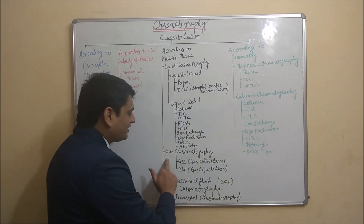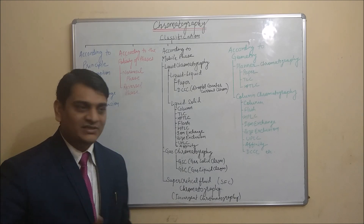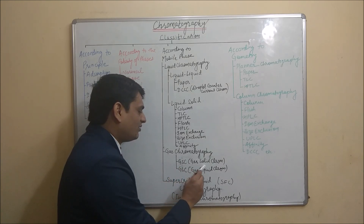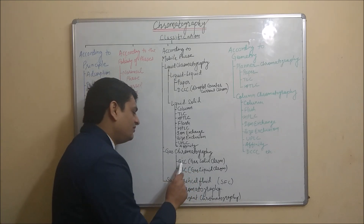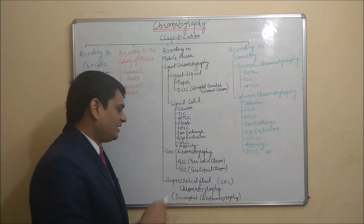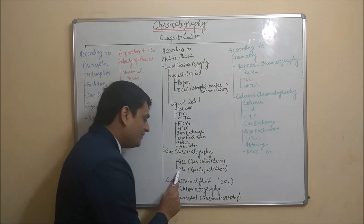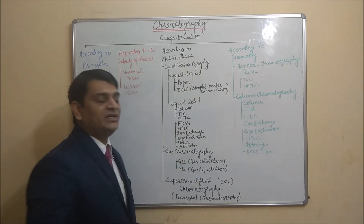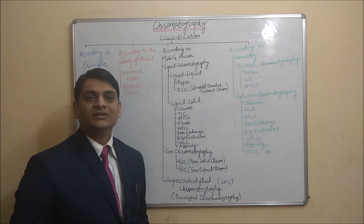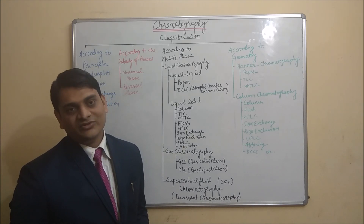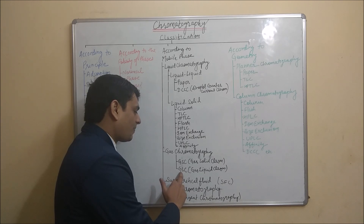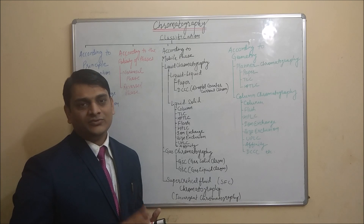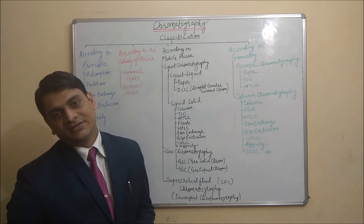Gas chromatography is divided into two categories. The first is GSC (gas-solid chromatography), where gas is the mobile phase and solid is the stationary phase — separation is based on adsorption chromatography. The second is GLC (gas-liquid chromatography), where gas is the mobile phase and liquid is the stationary phase, and separation takes place due to partition coefficient.